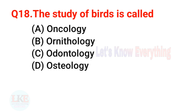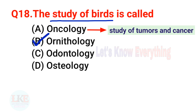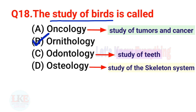Question 18: The study of birds is called Ornithology. Remember, option A, Oncology is the study of tumors and cancer; option C, Odontology is the study of teeth; and option D, Osteology is the study of the skeletal system.